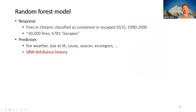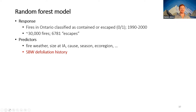The specific question is how does spruce budworm defoliation affect the probability of a wildfire escaping initial attack. We used a random forest model approach. The response variable is Ontario fires classified as contained or escaped from 1990 to 2000 — about 30,000 fires, just under 7,000 of which are classified as escaped. Predictors include all FWI indices, size at initial attack, cause, season, ecoregion, and the spruce budworm defoliation history.